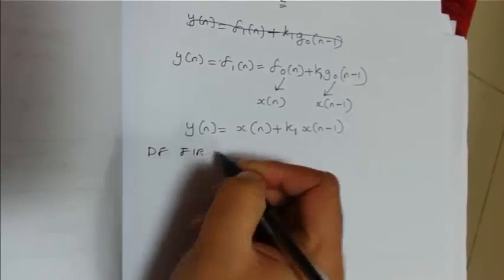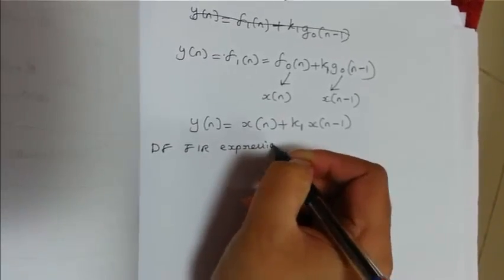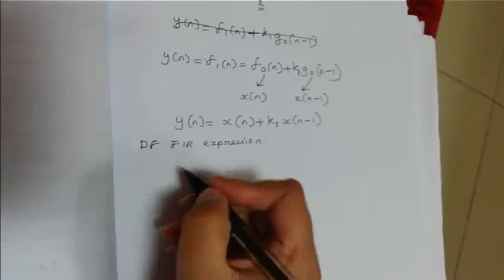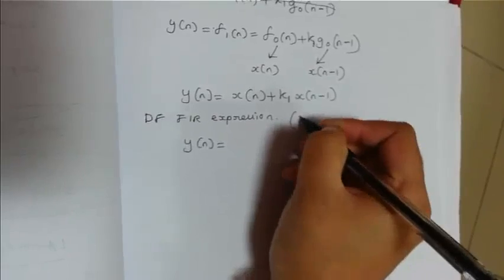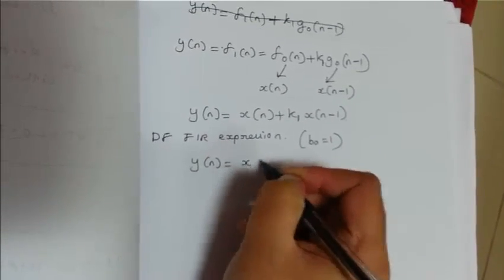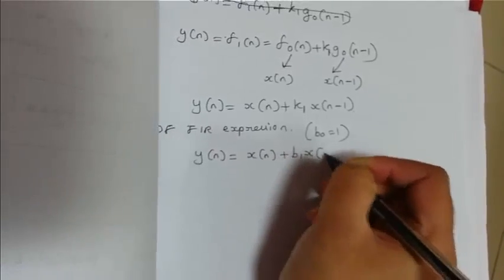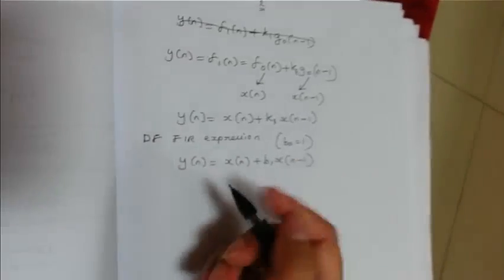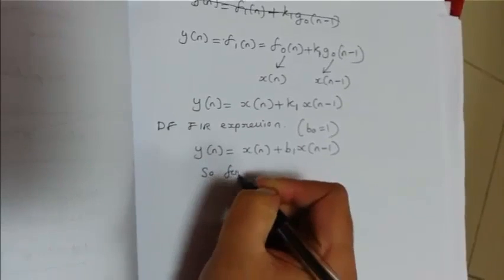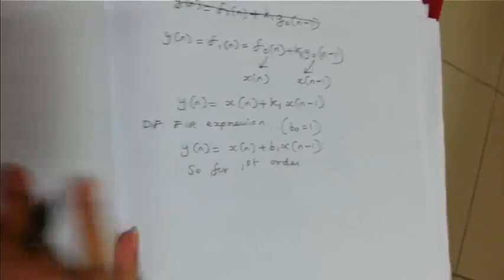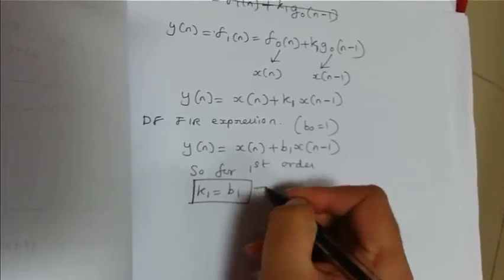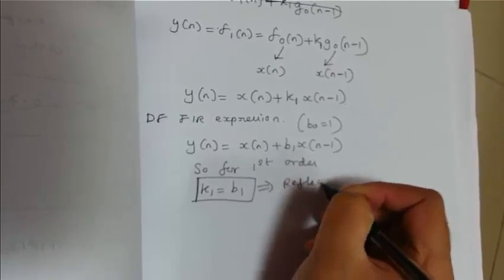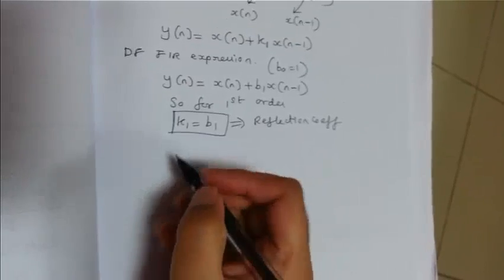If we recall the direct form expression for FR filter, we know the filter coefficients B0 and B1. We'll assume B0 as 1 here. So Y of N is X of N plus B1 X of N minus 1. If we compare both the expressions, we can obtain the value of reflection coefficients. The value of reflection coefficient is important for implementing the FR filter in lattice form.